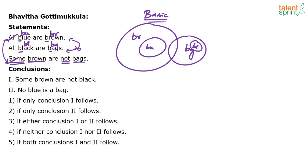Now look at the conclusions. Remember the fundamental rule — the classical laws to be followed when solving syllogism questions. If a definite conclusion does not follow the basic diagram, it is false. If a definite conclusion follows the basic diagram, you cannot take it as true yet — you have to verify the other possible diagrams.